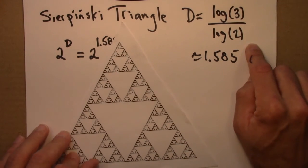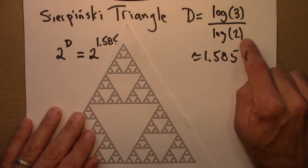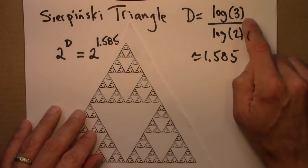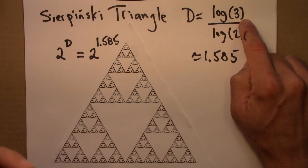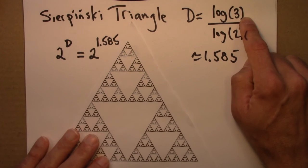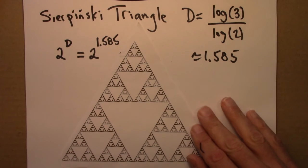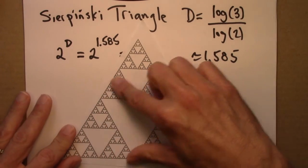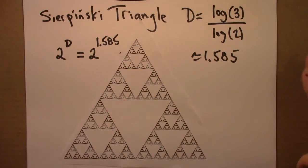What a dimension like this is telling us is that every time we scale it up by a factor of 2, we double all its lengths, the mass or volume or size of the shape goes up by 3. This gives us another way to think about dimension. It tells us how the properties of an object change as the size of that object is scaled up or down.